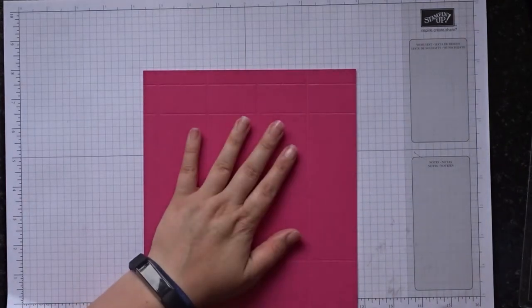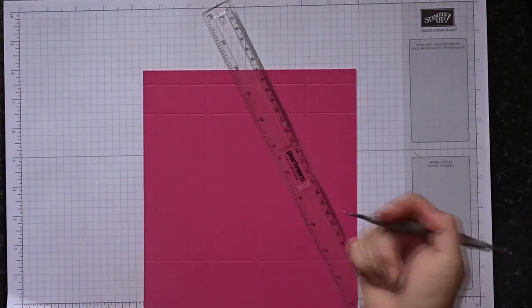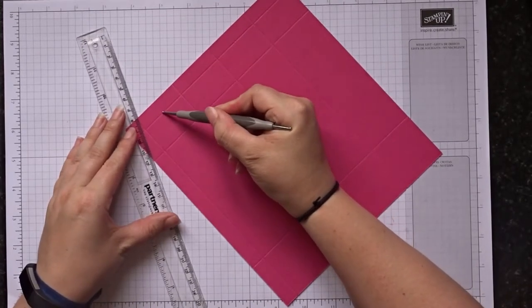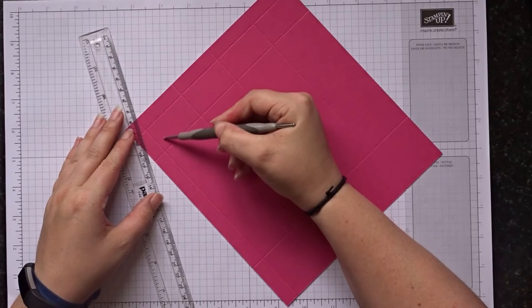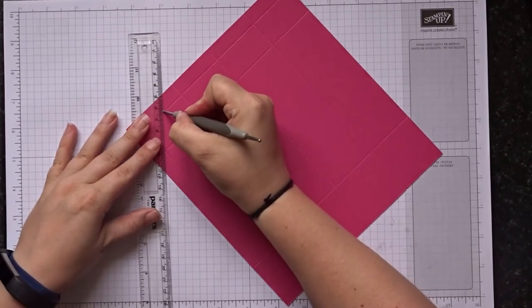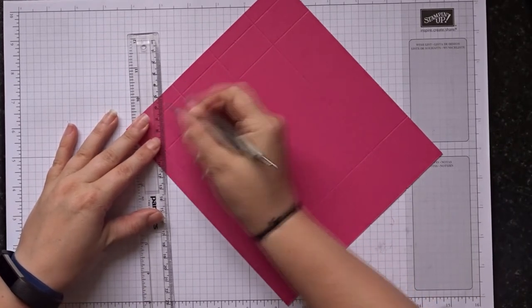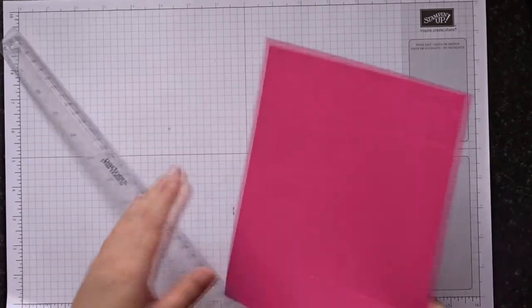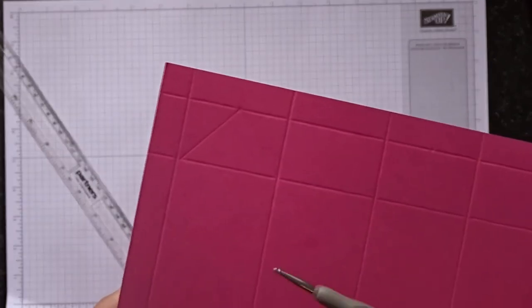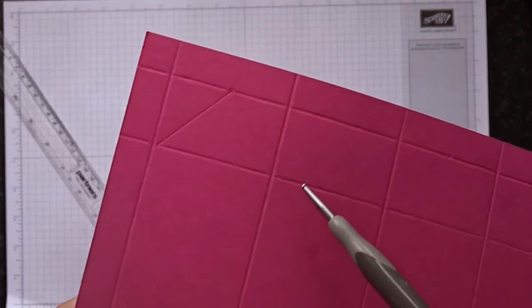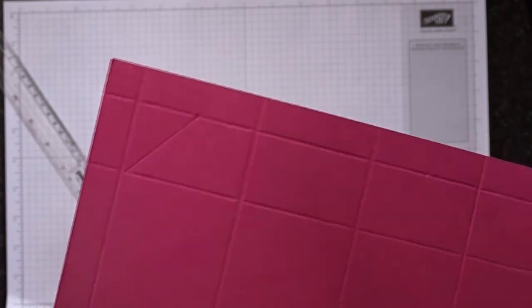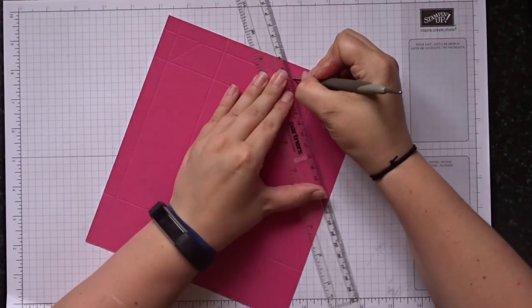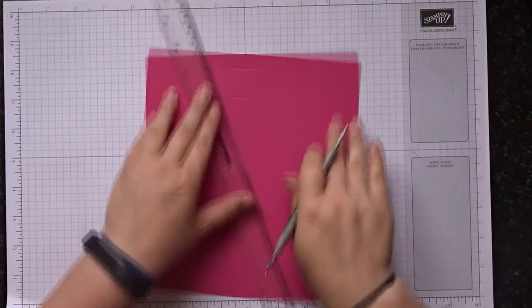So what we need to do next is grab a ruler, and I'm still using my scoring stylus. From that point you've just made on your scoreboard, you need to connect that diagonally to the corner. Hopefully you can see that little triangle. We're going to do the same again on the other one.